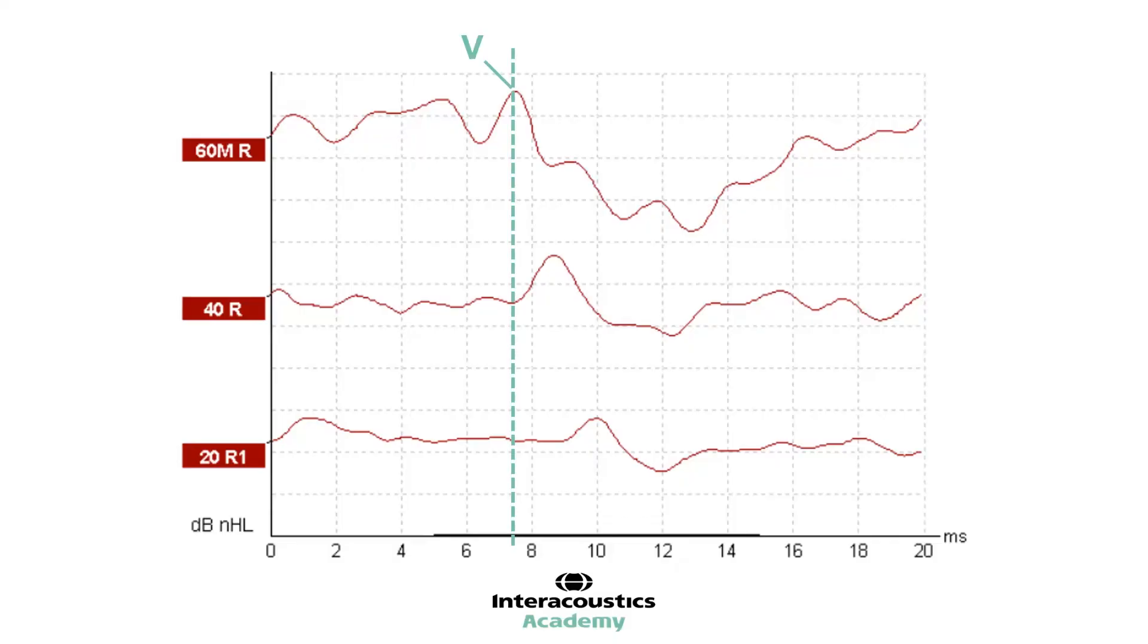By decreasing the intensity level to 40, we can see that the latency of wave 5 has shifted to the right. In other words, it is a longer latency. Here, wave 5 presents at about 8.5 milliseconds. With a further decrease in intensity, we can see that the latency of wave 5 has shifted even further to the right, presenting at 10 milliseconds. This demonstrates the expected latency shift as a function of decreasing intensity.